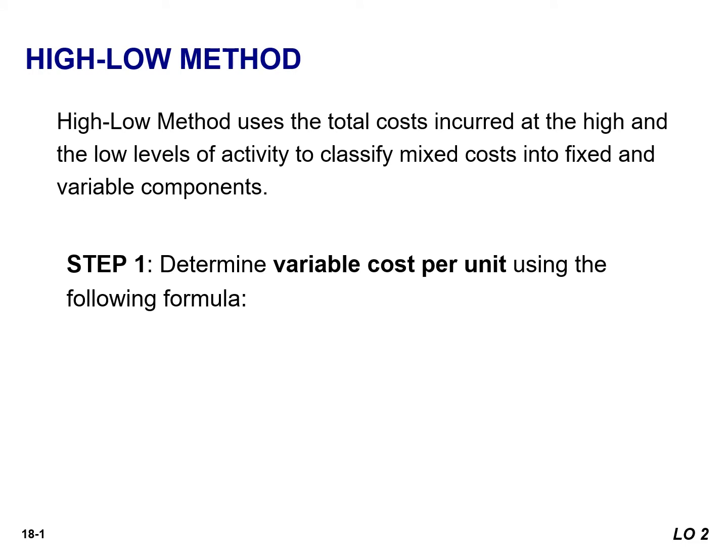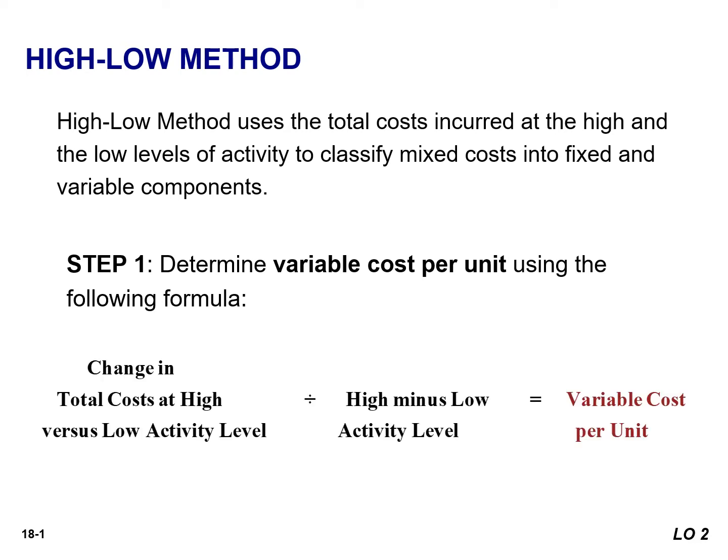The first thing we need to do is determine the variable cost per unit, and we're going to use the following formula. We're going to take the change in total cost at the high versus the low level of activity, and divide that by the high minus the low level of activity. That will give us our variable cost per unit.